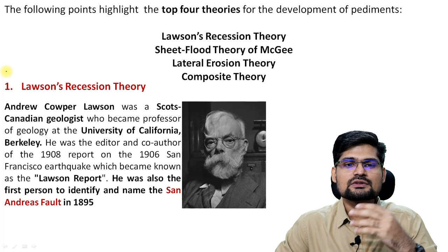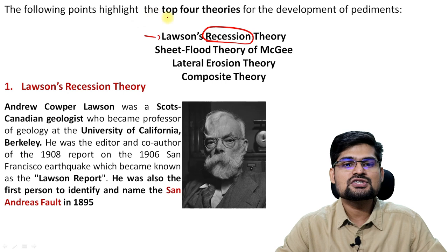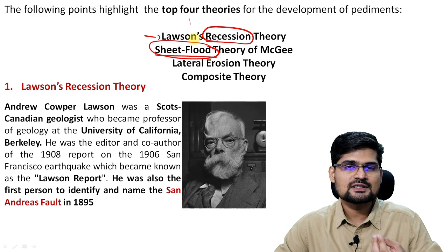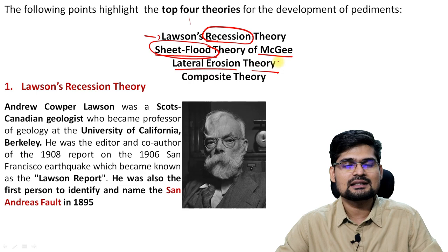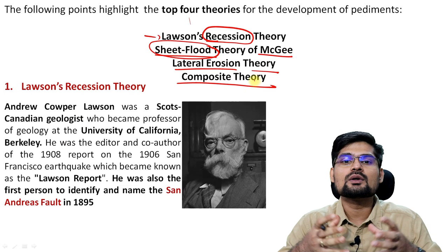Now let's understand the top four theories. What are the top four theories that explain the formation of these pediments? First is Lawson's recession theory — recession meaning something is receding back. Then you have the sheet flood theory — something causing sheet erosion, which was given by McGee. Then you have the lateral erosion theory — lateral meaning sideways erosion, related to planation and creek maze work. And finally the composite theory — composite meaning it has more than one factor.